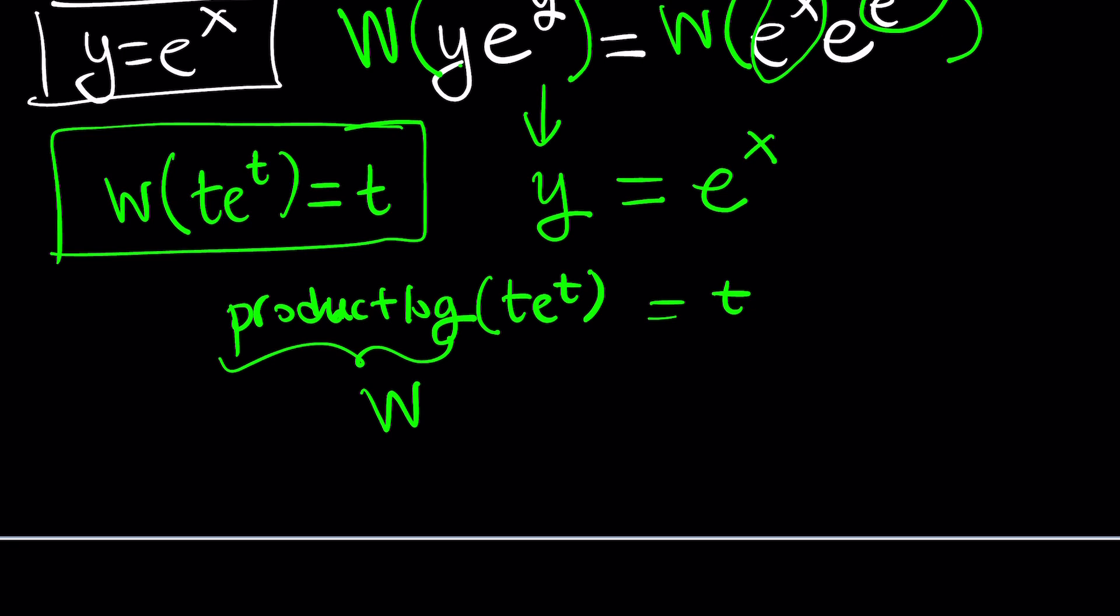Okay. Great. So y equals e to the x works. But let's go ahead and check out what Wolfram Alpha gives us. Right? Let's see what it says. And now we'll compare our answer to that one. All right, here we go. And the arrows basically means that I should now not forget to continue. Those are for me, so don't worry about it.